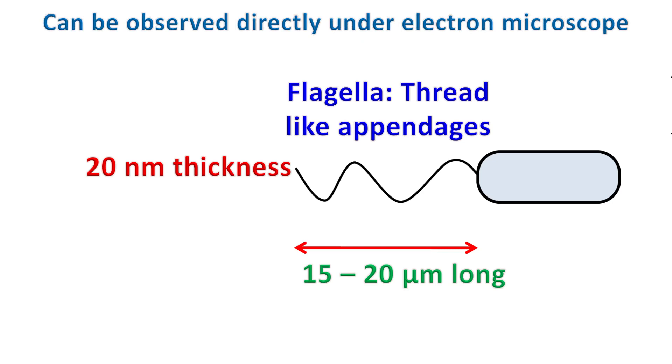Based on the location of flagella, cells can be classified into various types. The cell is said to be monotrichous if it has one flagellum.